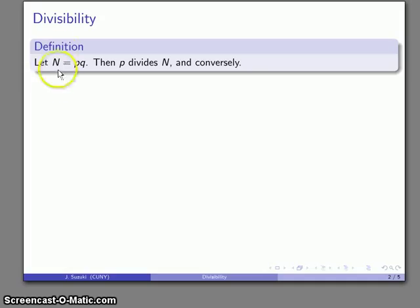Let's consider a few definitions. Suppose N is a product of two numbers, p and q. Then we say that p divides N, and conversely, if p does divide N, then we're guaranteed that N is a product of two numbers.